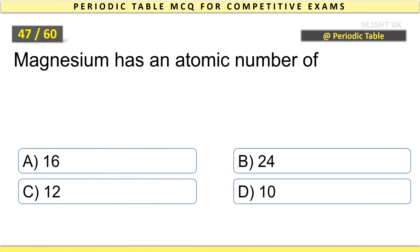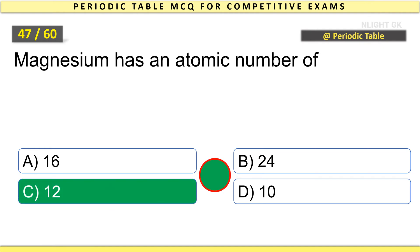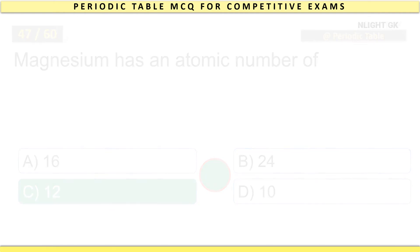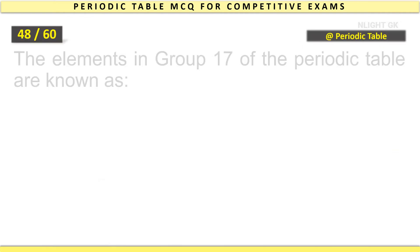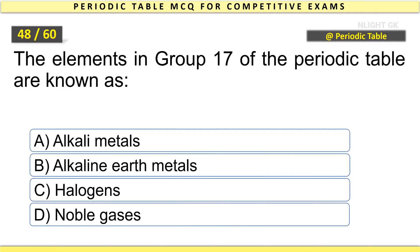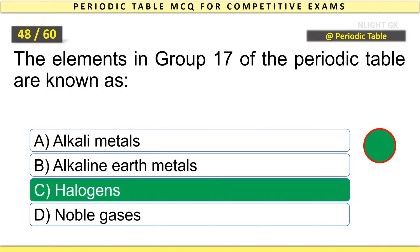Magnesium has an atomic number of 12. The elements in group 17 of the periodic table are known as Halogens.